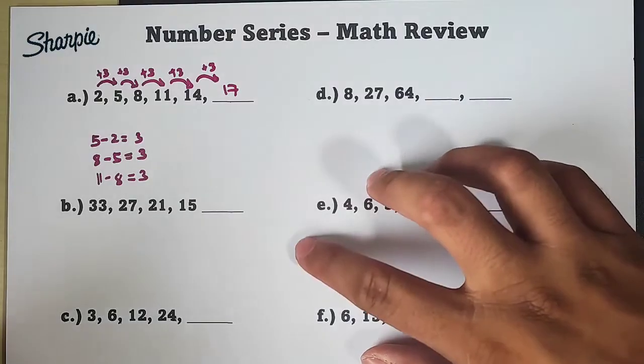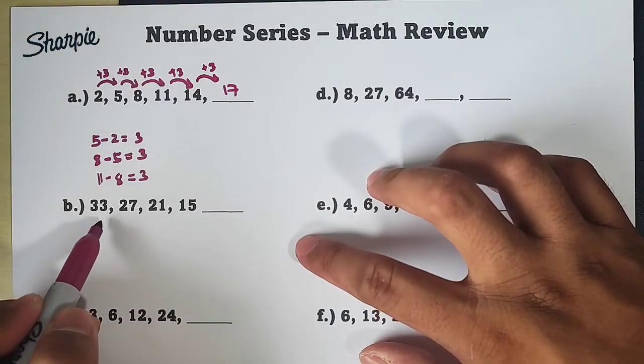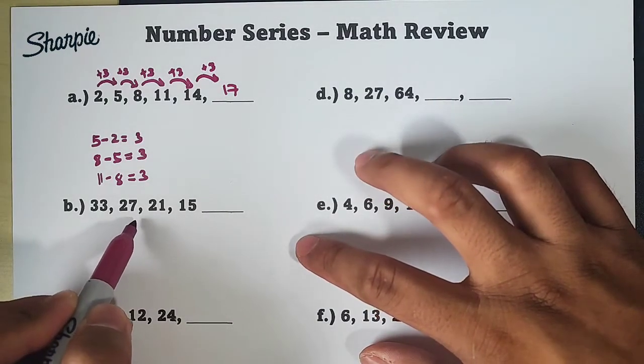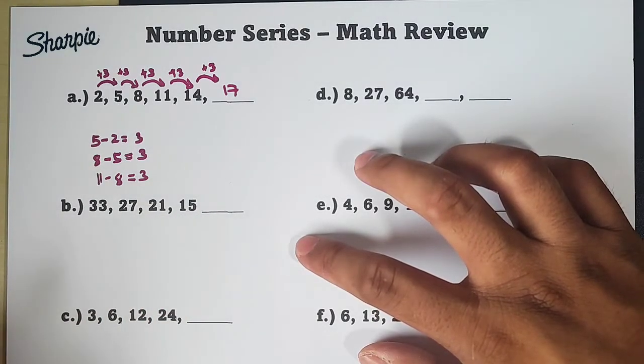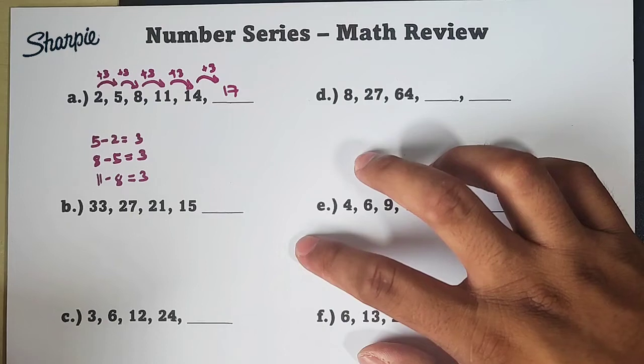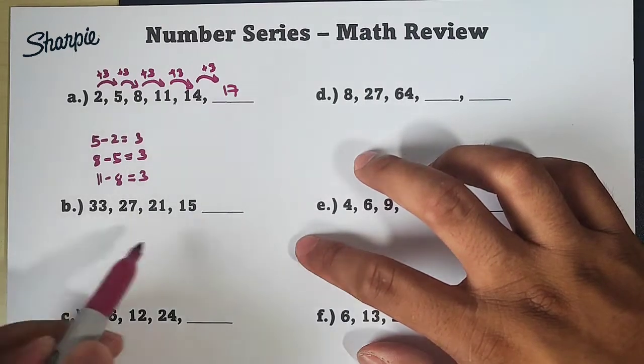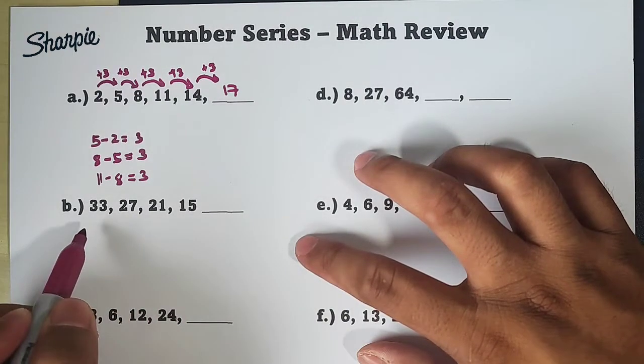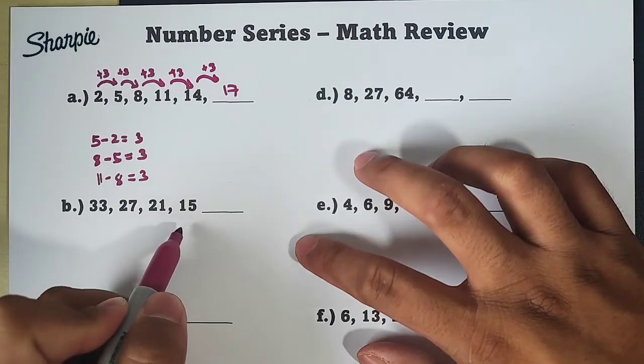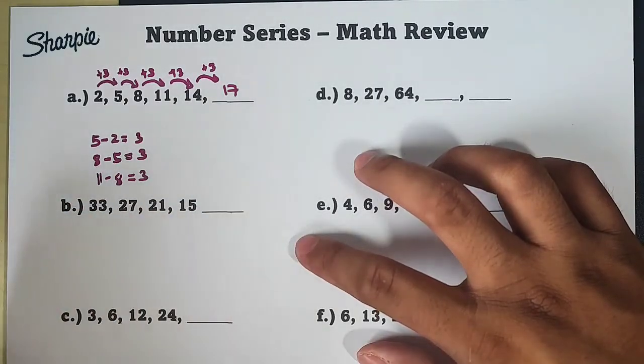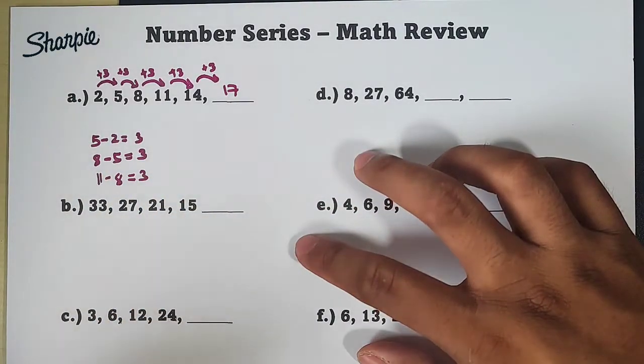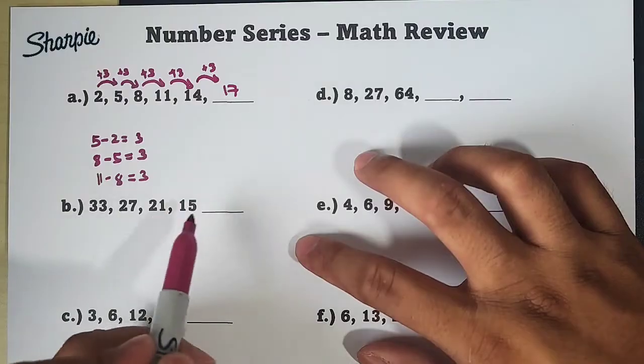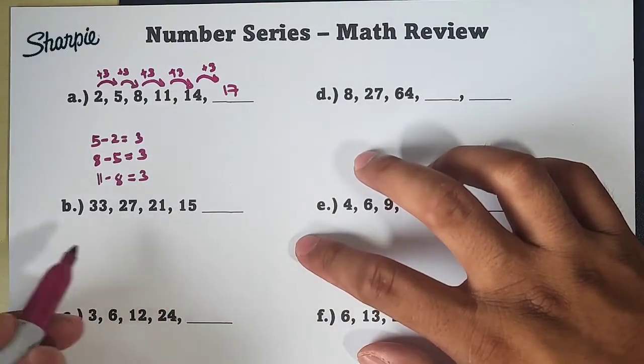Now, let's proceed with item number 2. For number 2, we are given 33, 27, 21, 15. Sir, maaari ba natin gamitin yung pattern natin? Yes. Pero, kung mapansin nyo lang, from 33, 27, 21, 15, descending or mula sa mataas, papunta sa pababa yung ating numbers. Meaning, yung expect natin na mas mababa sa 15, yung answer natin.